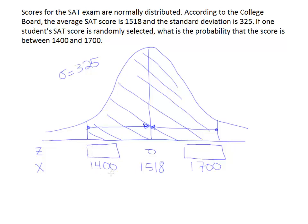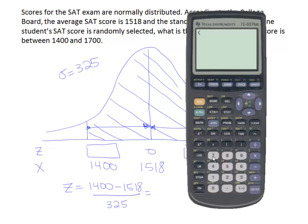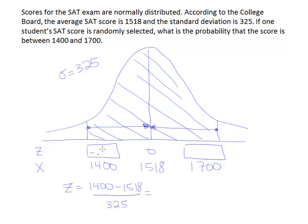Let's continue by converting this into a z-score. Remember the formula: z equals the score you want to convert, 1400, minus the mean, which is 1518, divided by 325. I'm going to plug that into my calculator. I'll use a parenthesis for the top and put 1400 minus 1518, then divide that by 325. When I hit enter, I get minus 0.36 to two decimal places.